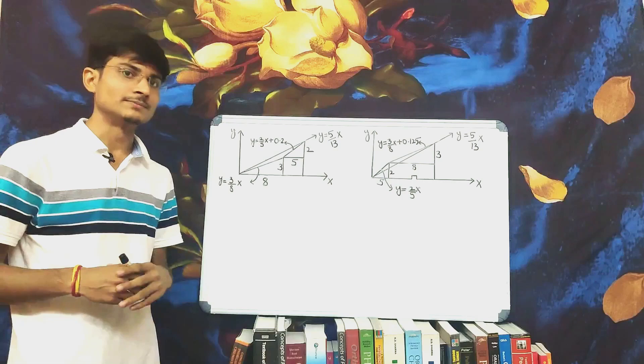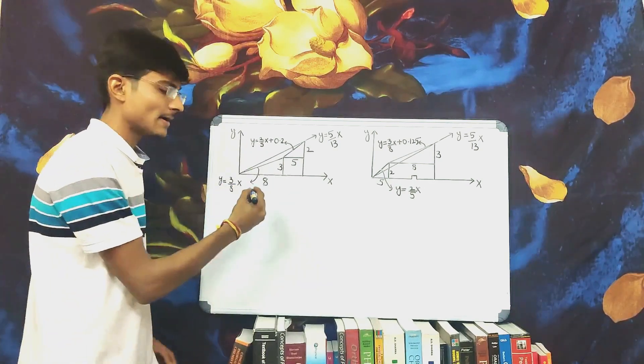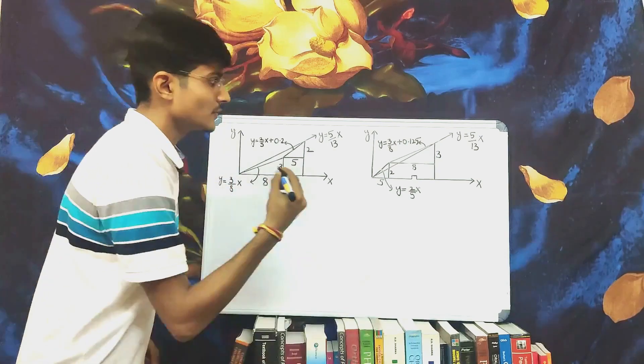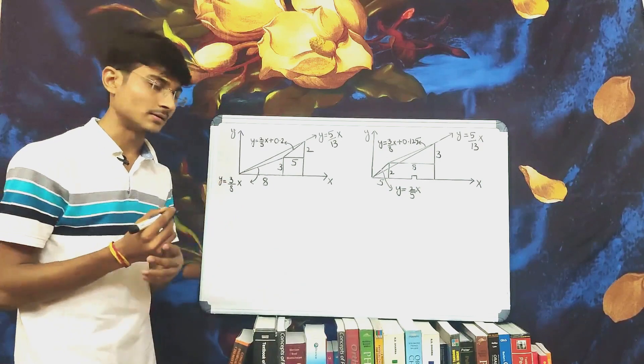There's another method to find the solution. There are two cases. In the first case, we will consider the 3 by 8 triangle at the bottom. And in the second case, we will consider the 2 by 5 triangle at the bottom. In both cases, it forms quadrilateral.